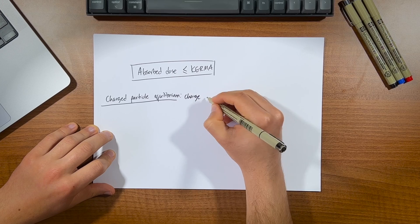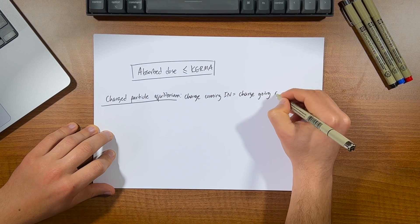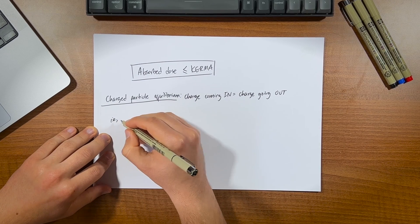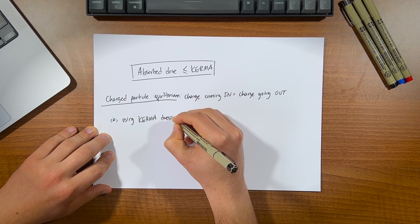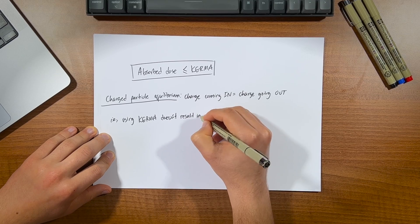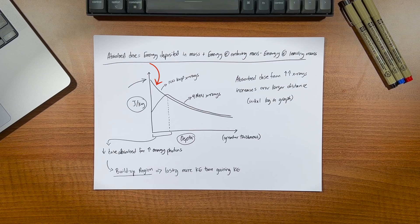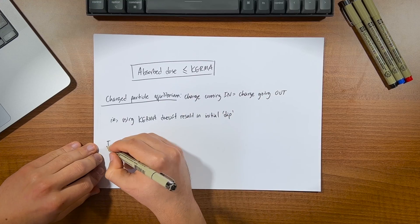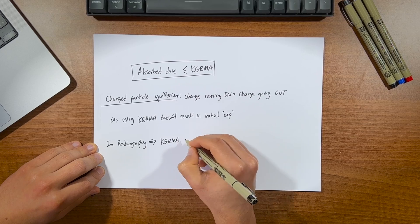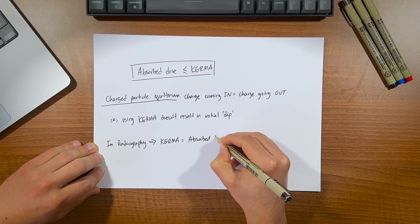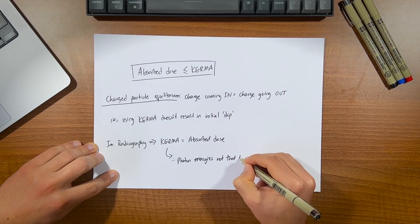Charged particle equilibrium simply means the charge coming into the region is equal to the charge leaving that region. So this means if we use Kerma instead of absorbed dose, we don't see that initial discrepancy in the absorption of dose within the first few microns of tissue for these higher energy electrons. So this line here is really representing Kerma. And for our purposes - that is the radiation we use in diagnostic radiography - Kerma and absorbed dose are basically the same, because the photon energies aren't that high relative to therapeutic exposures, for example.